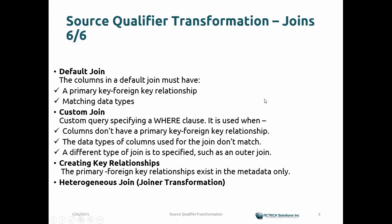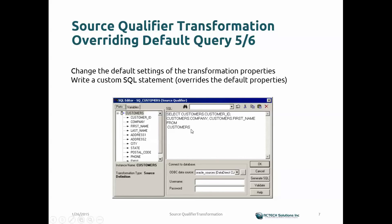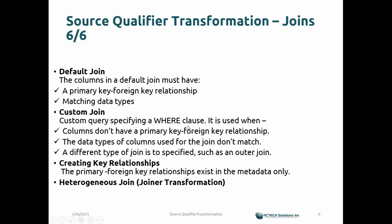The Integration Service, as discussed in prior videos, is a service within the Informatica platform. For Source Qualifier joins, the first type is the default join, where columns must have a primary key–foreign key relationship. Custom joins use a WHERE clause — if you look at the auto-generated SQL statement, it doesn't include a WHERE clause by default, but you can add one to filter records directly within the custom SQL statement when columns don't have a primary key or foreign key relationship.